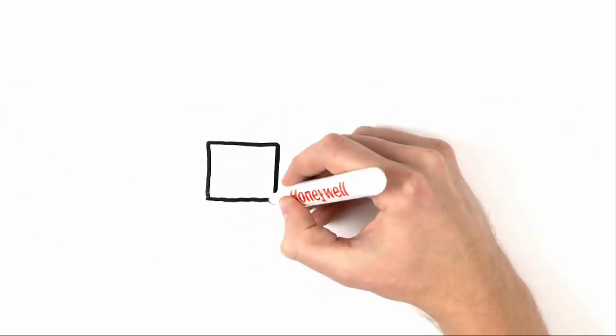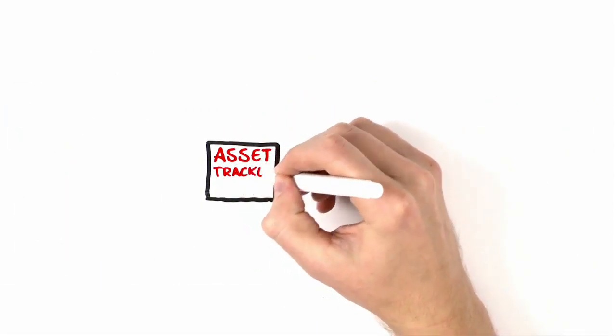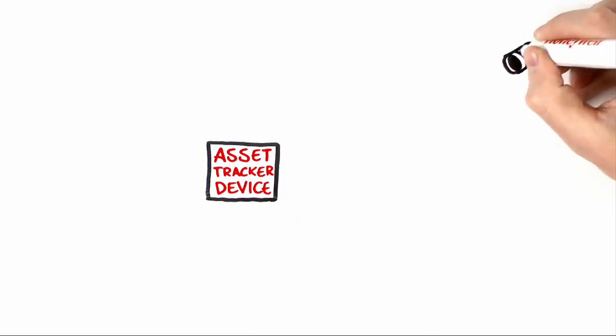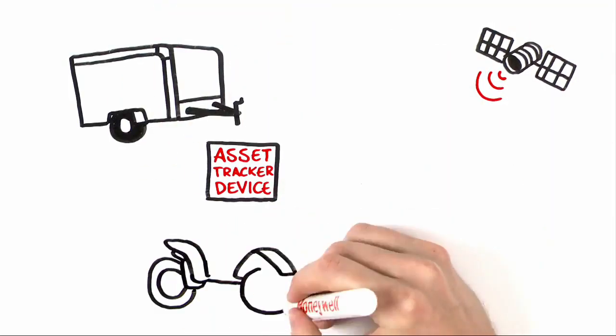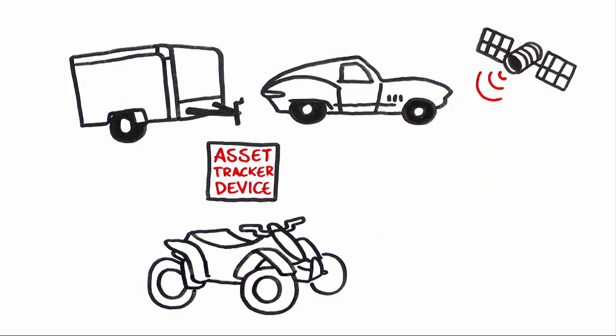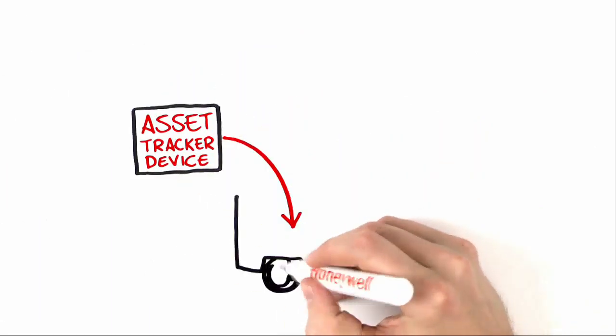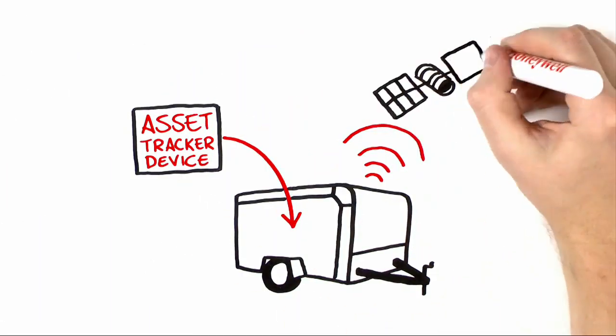There are two types of Honeywell services that can benefit you. The asset tracker lets you monitor fixed or mobile assets like trailers, ATVs, or even classic cars. Place the device in the asset and it transmits a signal to tracking satellites.